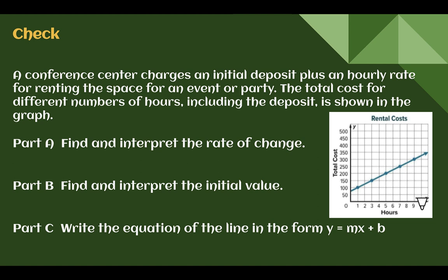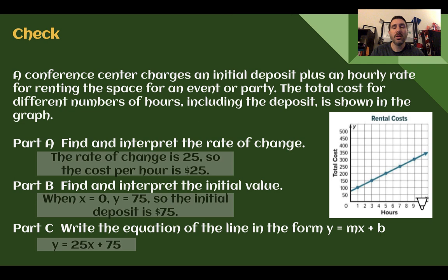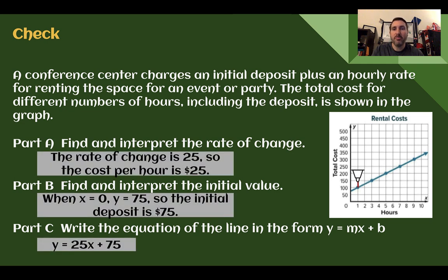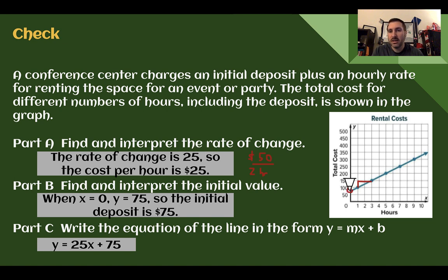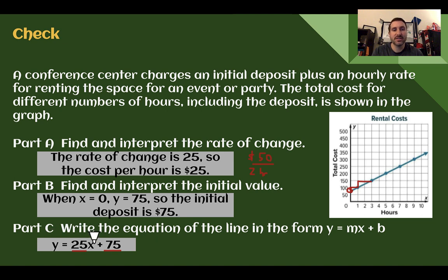Check your understanding — read through the situation and answer each part. Pause the video now and complete this check. Check your answers: in part A, the rate of change went up $50 for two more hours, so $25 per hour. Where is it crossing? If each hour is $25 and this was $100, going back one hour means it must be $25 less — so the initial value is 75. Plugging these in: rate of change is 25, initial value is 75, so y equals 25x plus 75.